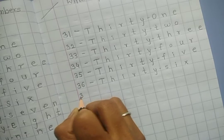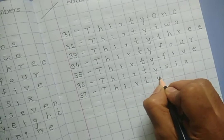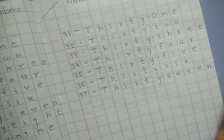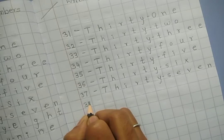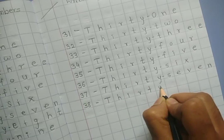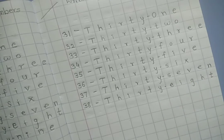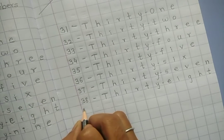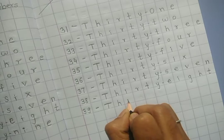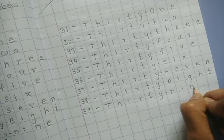Next number is 37, T-H-I-R-T-Y-S-E-V-E-N, thirty-seven. 38, T-H-I-R-T-Y-E-I-G-H-T, thirty-eight. Next number is 39, T-H-I-R-T-Y-N-I-N-E, thirty-nine.